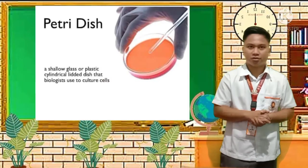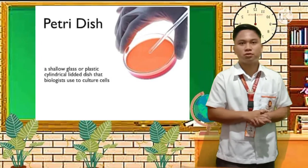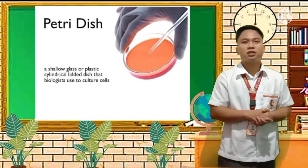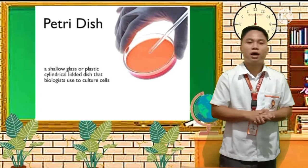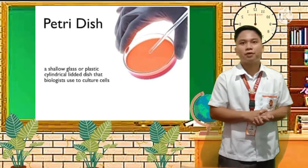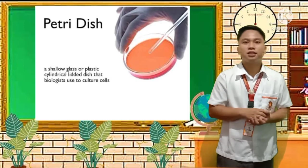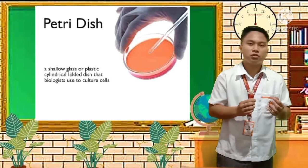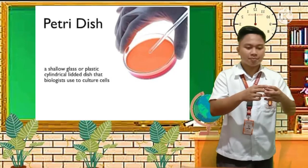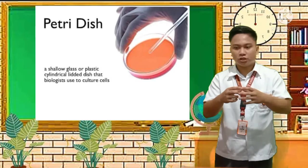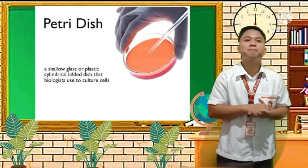Next we have the petri dish. It is a shallow glass or plastic cylindrical dish that biologists use to culture cells. We often see it used by scientists — it is circular and used for microscope examination, where a cell sample is placed in the petri dish and then examined under a microscope.